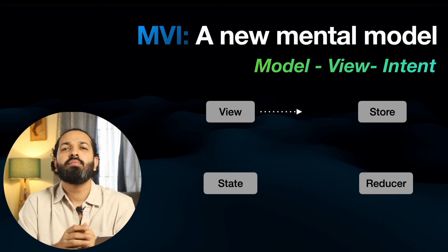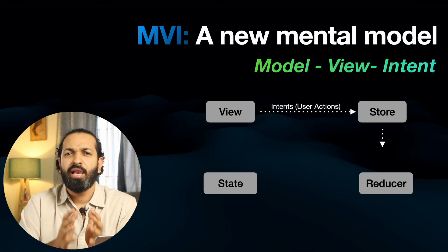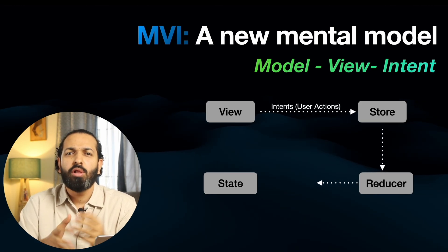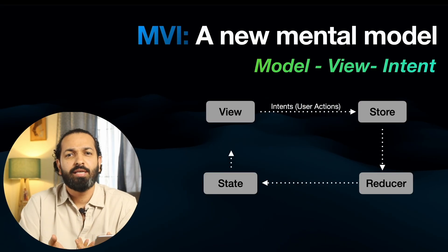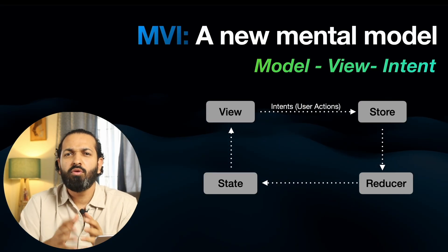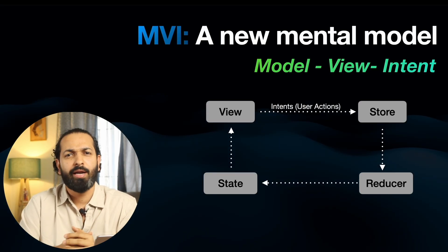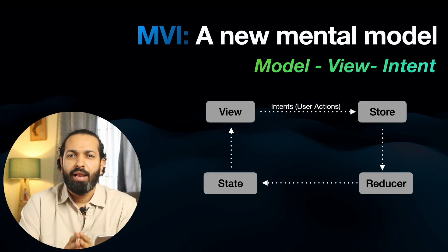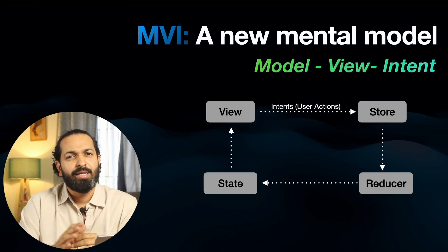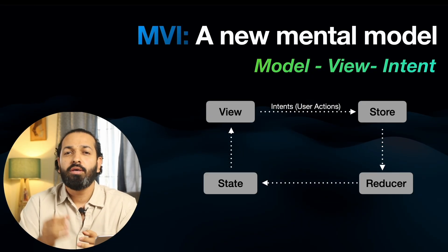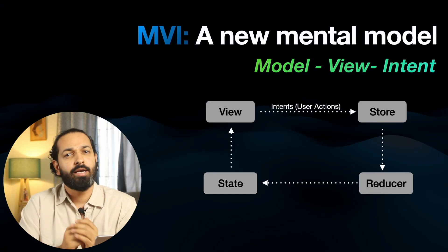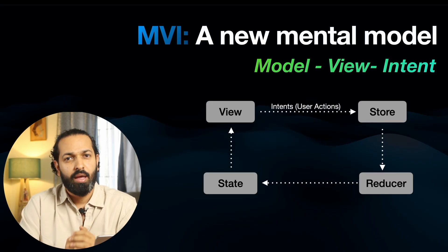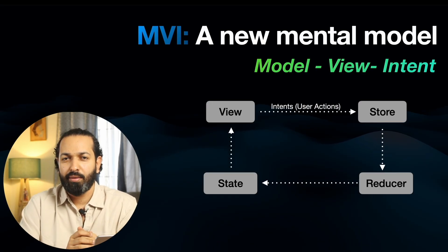And there comes MVI. Unlike Viper, we don't mention all the components of MVI in the name itself — there are a few more components other than just the model, view, and intent, and we'll discuss them in a few minutes. But for now, just understand that MVI architecture brings a unidirectional data flow — a single source of truth for your UI.